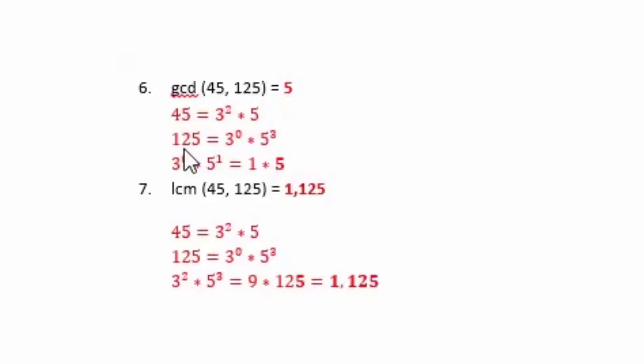Then take 125, use a similar process. Notice that I have a 3 to the 0 because 125 is equal to 25 times 5 or 5 times 5 times 5.